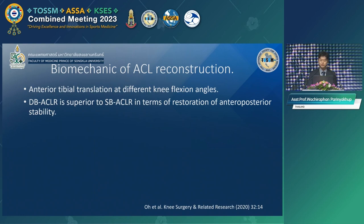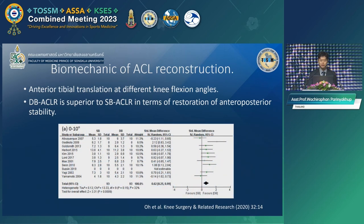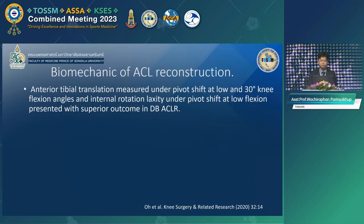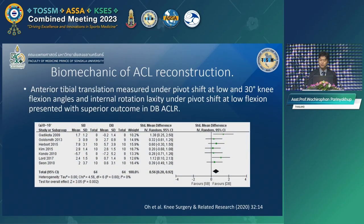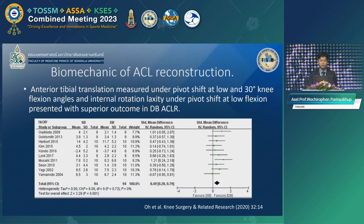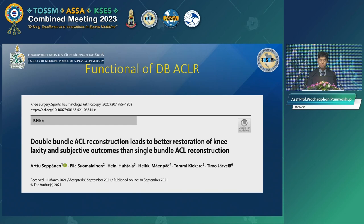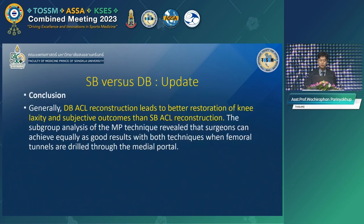Recent literature on biomechanics studies comparing single bundle and double bundle reconstruction shows that in terms of anteroposterior stability, the double bundle has superior results at every degree of knee flexion from 0 to 90. Also, in the pivot shift test, the double bundle had superior results compared to single bundle at 0 to 30 degrees of knee flexion. A 2022 review literature concluded that double bundle reconstruction leads to better restoration of knee laxity and superior subjective outcomes compared to single bundle ACL reconstruction.